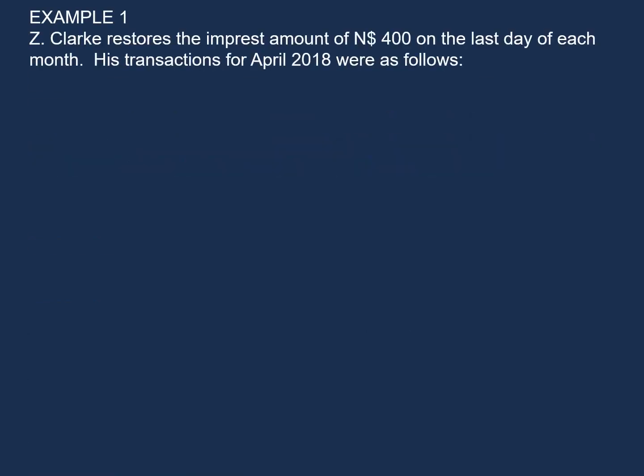Our example reads as follows. Z-Clark restores the impressed amount of $400 on the last day of each month. His transactions for April 2018 were as follows. But before we have a look at his transactions, let's have a look at the format of the petty cash book.